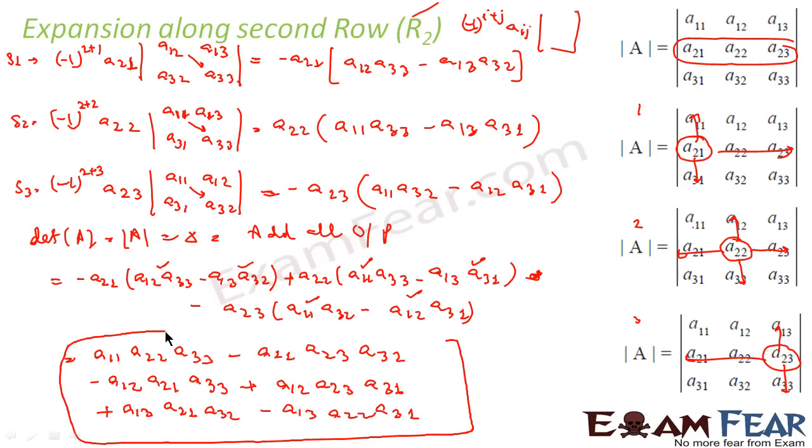So if you compare this guy with the one which we obtained in the last slide by expanding row 1, you will see that they are exactly same. They are exactly same. Thus you can say that if you expand using row 1 or row 2, you get the same answer.